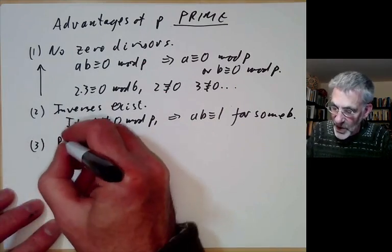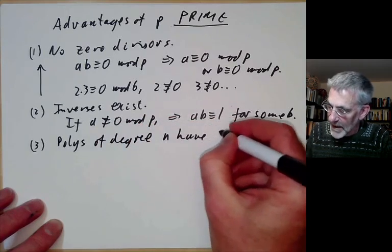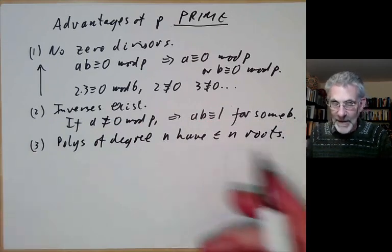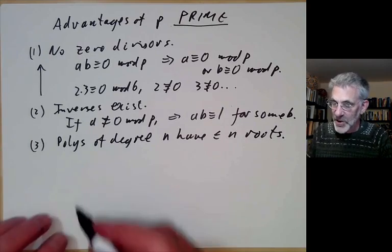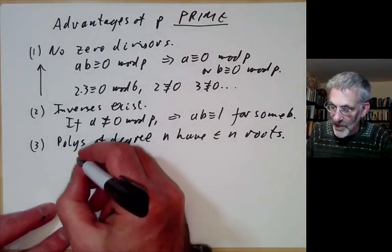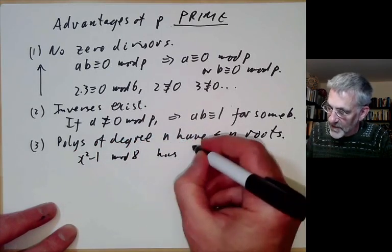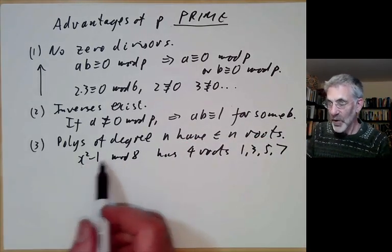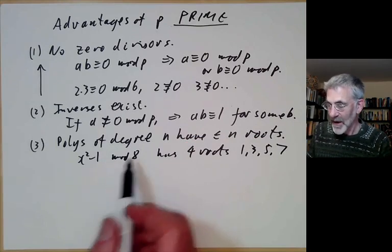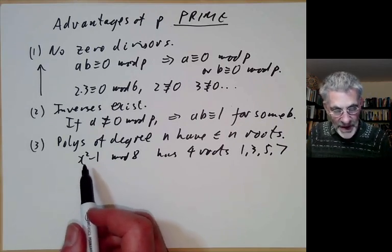Another nice property is that polynomials of degree n have at most n roots. You may think this is always true, but it's actually not true if you're not working modulo a prime. For example, x²−1 mod 8 has four roots: 1, 3, 5, and 7. So if you're not working modulo a prime, polynomials of degree n may have an unexpectedly large number of roots, which is rather inconvenient.